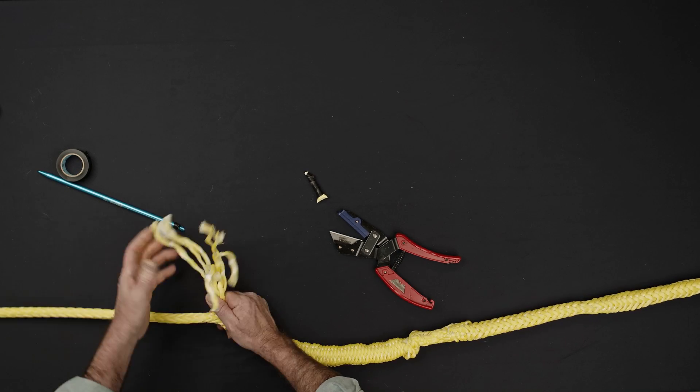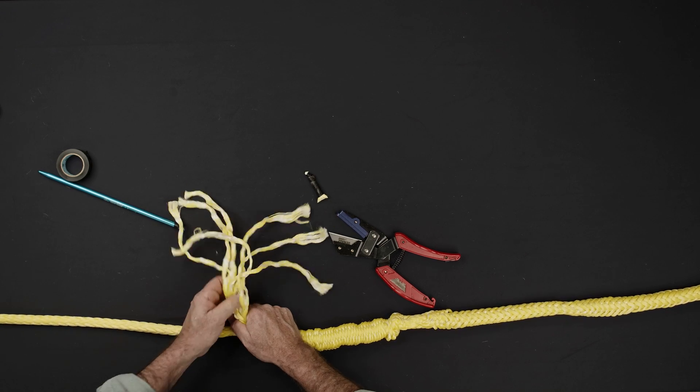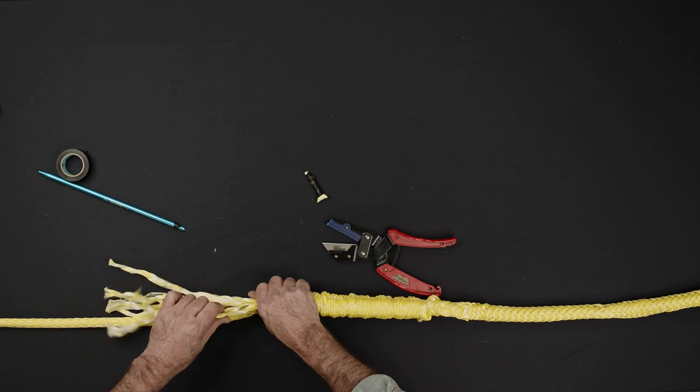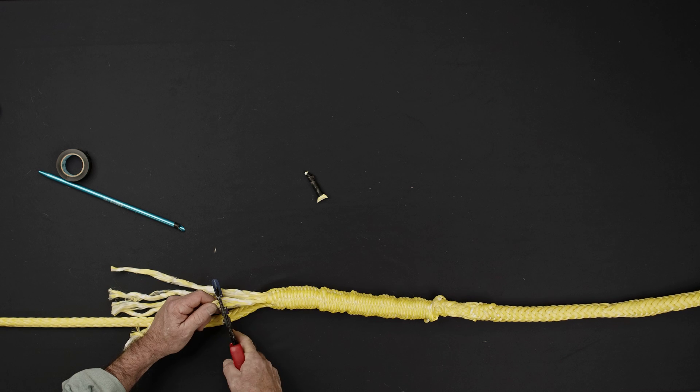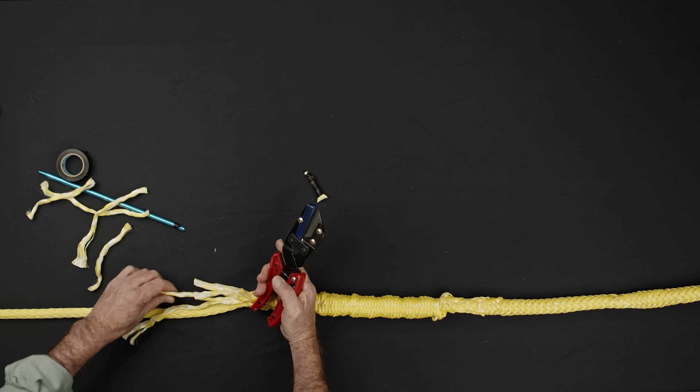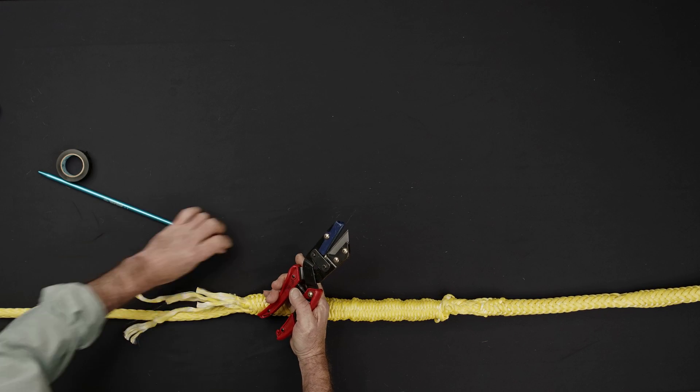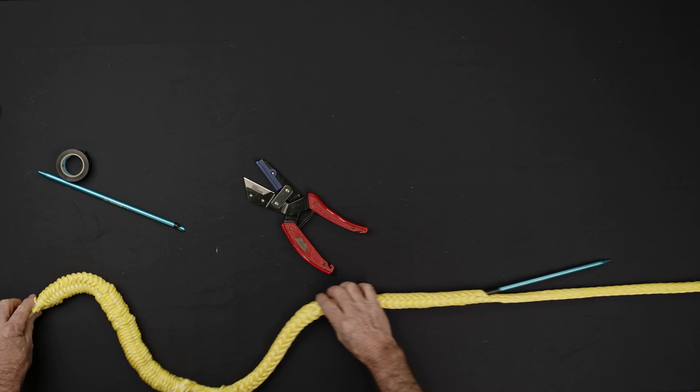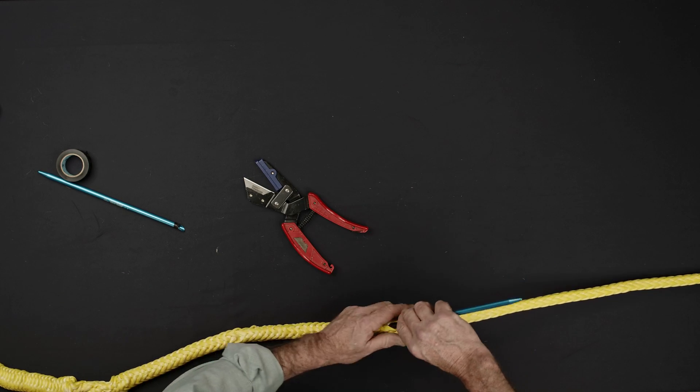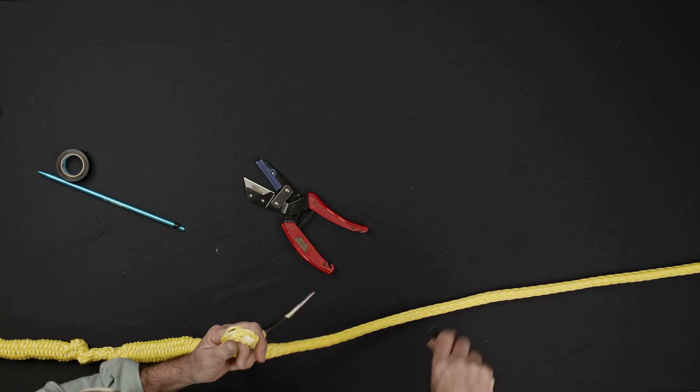Unravel the end of the rope and use your rope cutters or a sharp knife to cut a gradual taper pattern along the length of the tail. Repeat the taper on the opposite side of the splice.